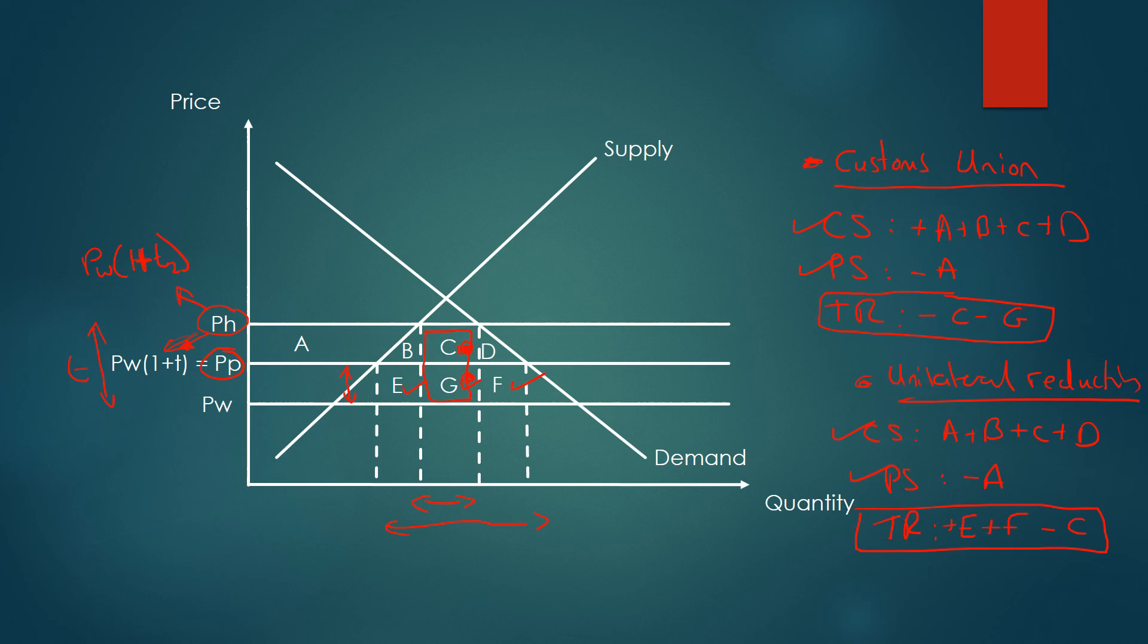For customs unions, tariff revenue is minus C minus G. However, tariff revenues for the unilateral reduction are plus E plus F minus C. Hence, this is greater than for the customs union.